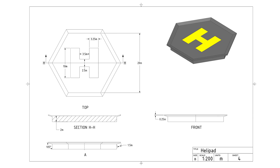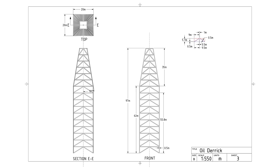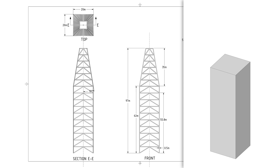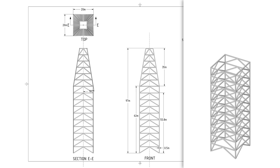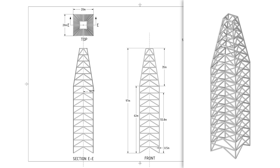An oil platform cannot be an oil platform without the most characteristic part, the oil derrick. In order to create it, we need a good plan to avoid spending countless hours building it. First, we can create a vertical prism with a square base. Then we can use the shell option to create a hollow prism and sketch the beam structure on its sides. Last, we can use the sketches as cutting tools to remove the excess material and create the truss.